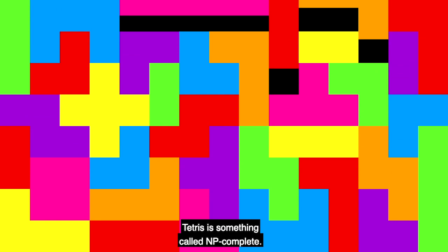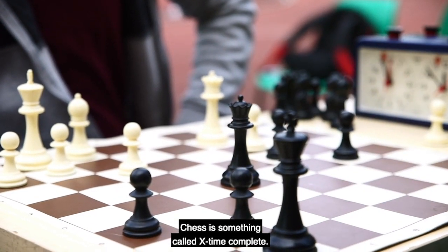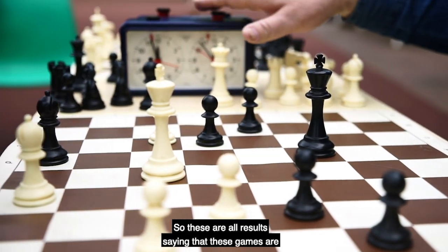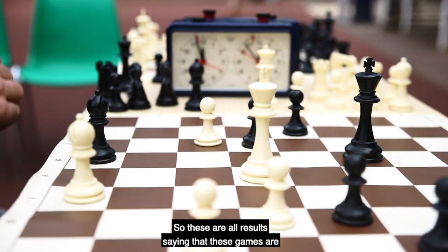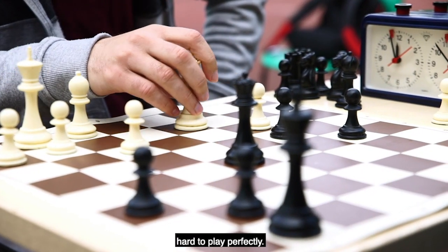Tetris is something called NP-Complete. Chess is something called EXPTIME-Complete. So these are all results saying that these games are hard to play perfectly.